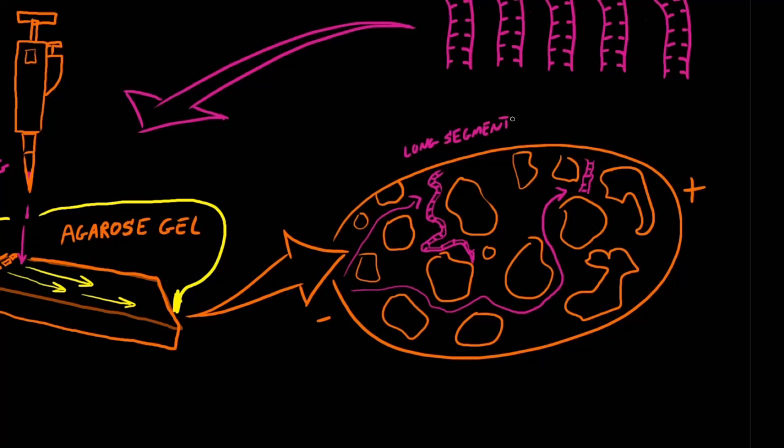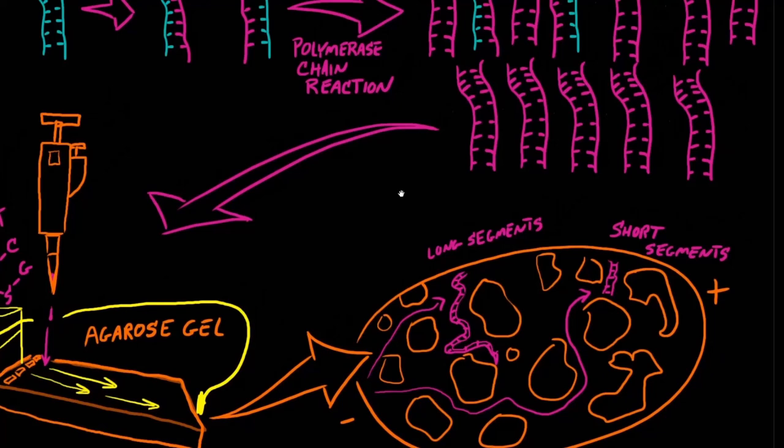But wait, why is the DNA in different segments at all? Well, that's thanks to another enzyme that we use in an earlier step in this technology, which we refer to as a restriction endonuclease, or a restriction enzyme. One of the most common ones is called EcoR1.